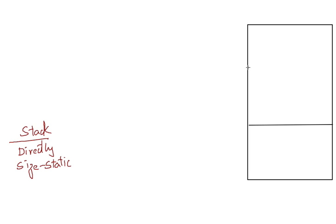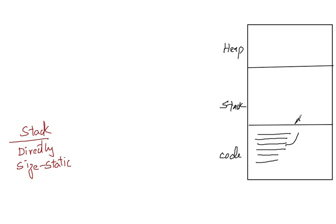Now let us go to heap. Here is the code section, this is the stack, and this is the heap. The program running here can directly access only the memory present inside the stack — it cannot access memory from the heap directly. So how is it going to access memory from the heap? First, let us understand why heap memory is required.